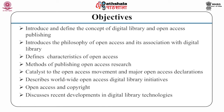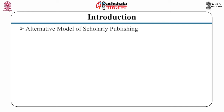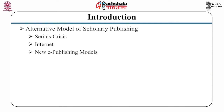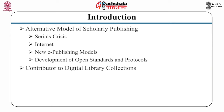Open access has emerged as an alternative model of scholarly publishing, essentially in response to the phenomenon called serials crisis, as well as to the advent of internet and proliferation of resources, new e-publishing models, and development of open standards and protocols. Continuing growth and development in open access publishing is a big contributor to digital library collections as well as digital library technology. Institutional repositories and open access journals are two primary routes to provide open access to scholarly literature.